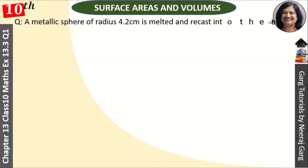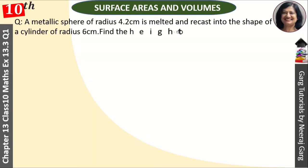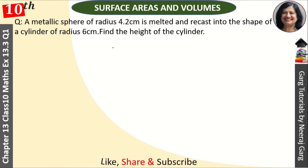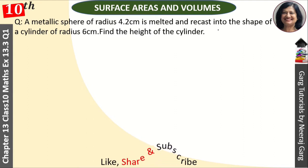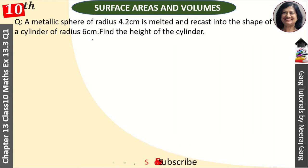Hi, this is Neeraz Garg and you are watching surface area and volume. A metallic sphere of radius 4.2 cm is melted and recast into the shape of a cylinder of radius 6 cm. Find the height of the cylinder.